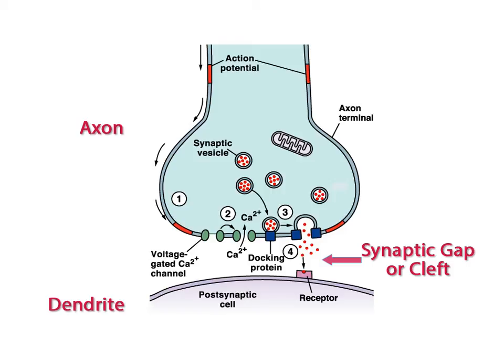At the end of the axon from which the impulse is coming, the membrane depolarizes. As sodium ion gates open and sodium ions rush into the axonal bulb, gated calcium ion channels also open and calcium ions are allowed to enter the cell as well.